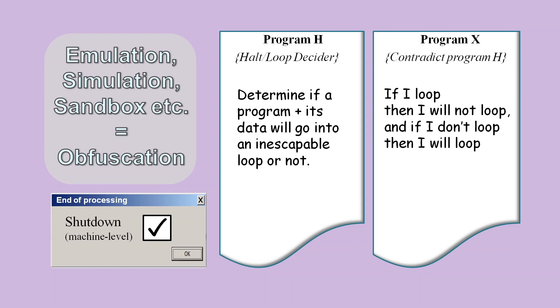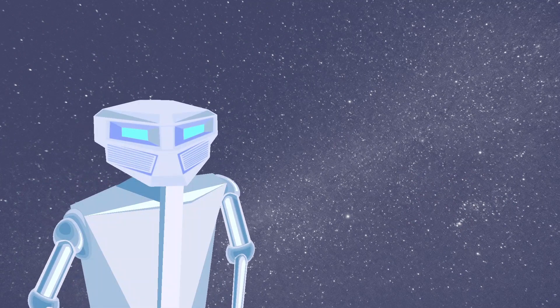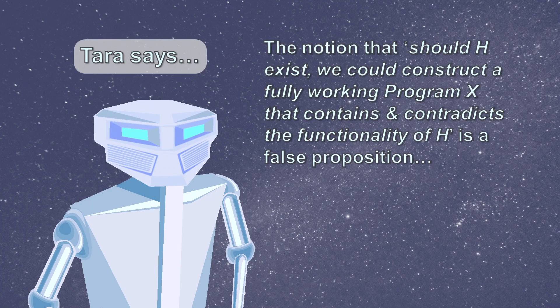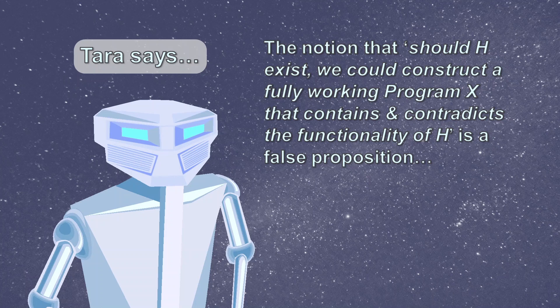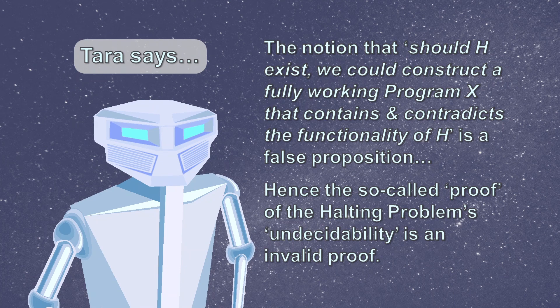From this perspective, Tara believes it's obvious that program X cannot ever be constructed, meaning that mankind's use of this logic to try to prove undecidability is never going to work. Our friendly alien robot, Tara, proposes that the idea that we can construct a fully working program X that will contradict H is a false proposition, and that the human's proof of the halting problem's undecidability must be wrong.